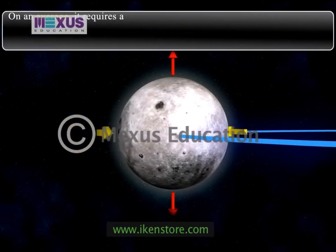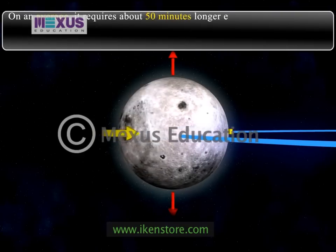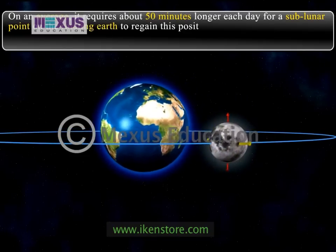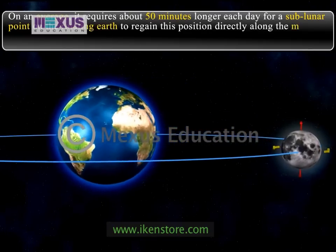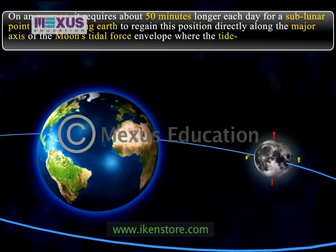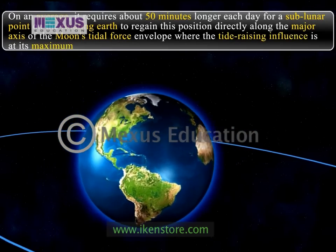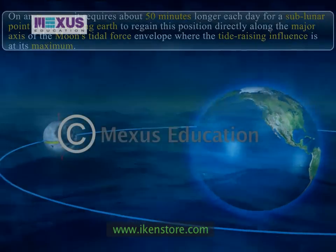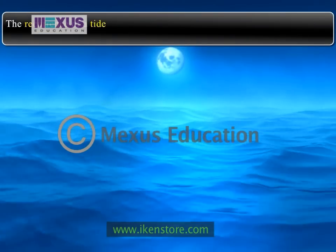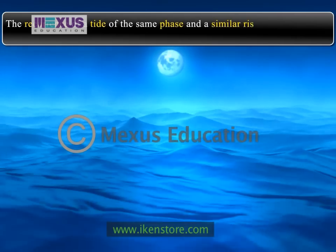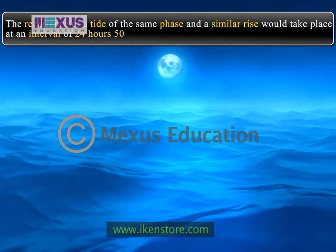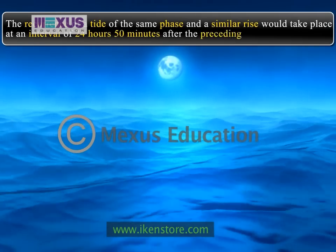On average, it requires about 50 minutes longer each day for a sublunar point on the rotating earth to regain its position directly along the major axis of the moon's tidal force envelope, where the tide-raising influence is at its maximum. In consequence, the recurrence of a tide of the same phase and similar rise would take place at an interval of 24 hours and 50 minutes after the preceding occurrence.